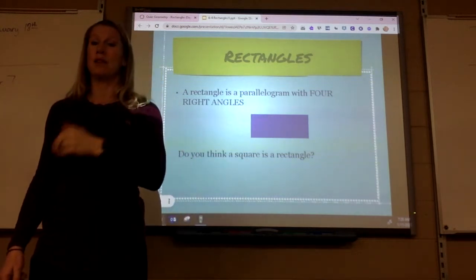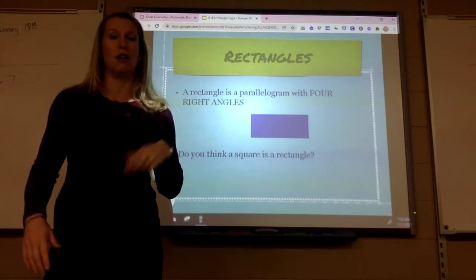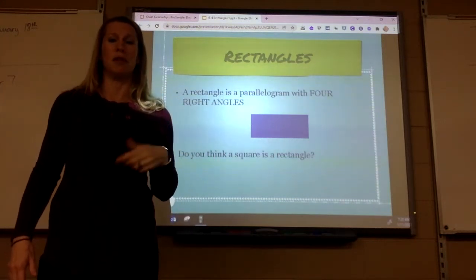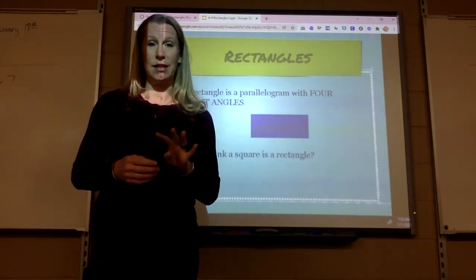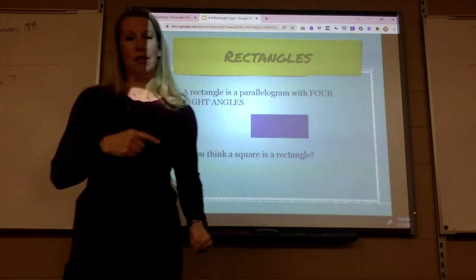Now a rectangle does not have to be a square, but a square is always a rectangle. The reason a rectangle does not have to be a square is because a rectangle doesn't have to have four equal sides. But if you have a square, it's always a rectangle because it always has four right angles.